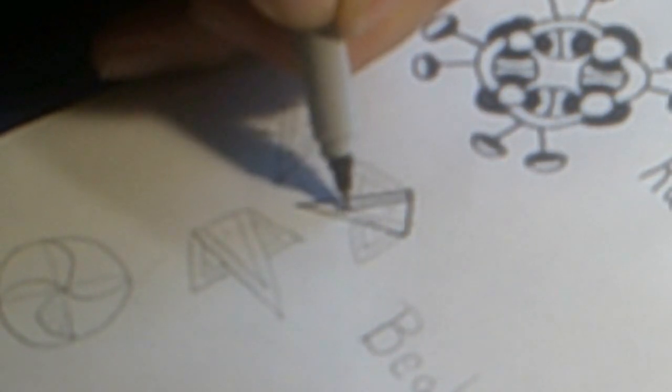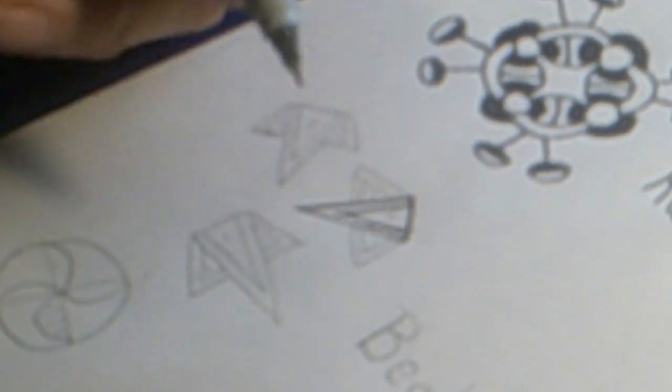And another V-shape inside, just slightly smaller. Now let's go to the side.